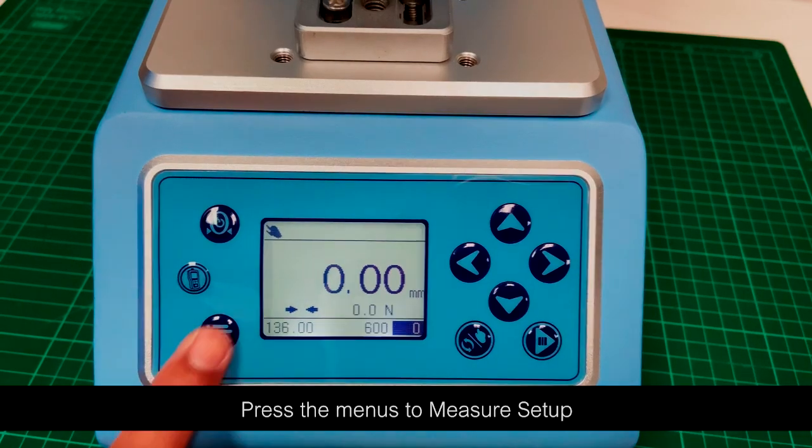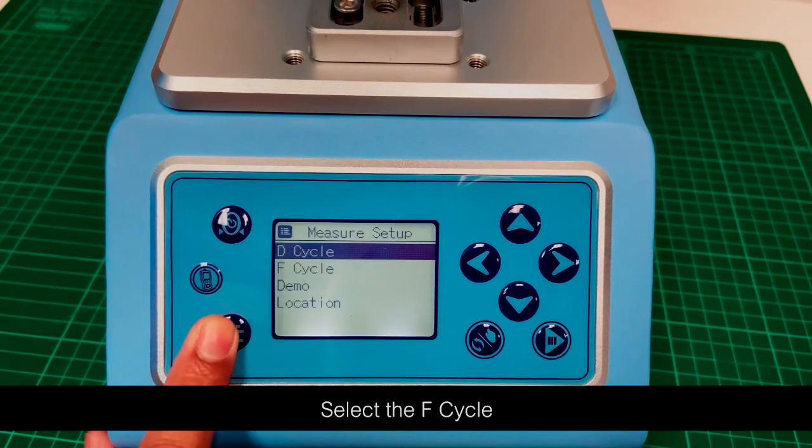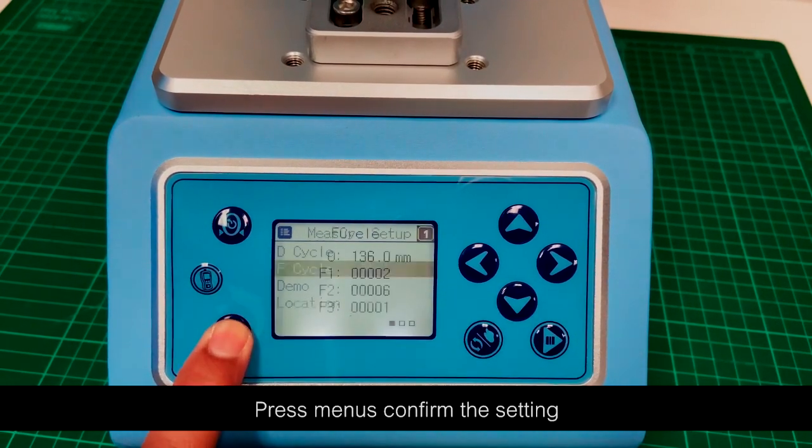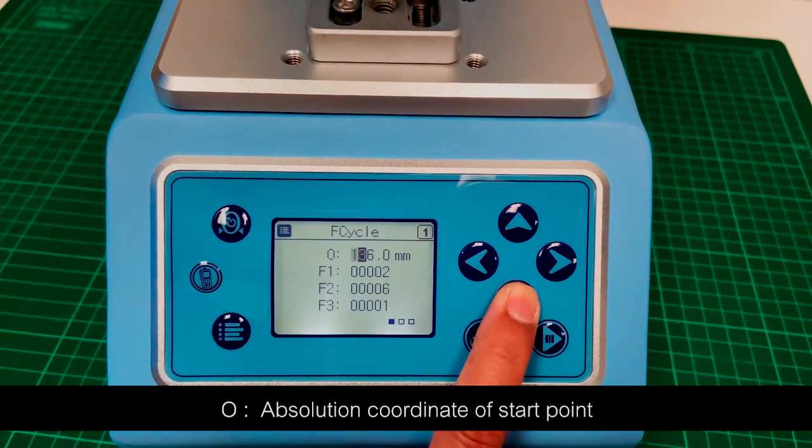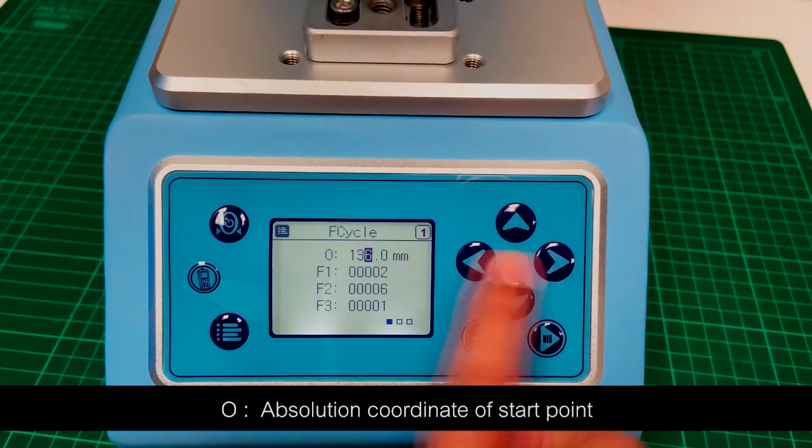Press the menus to measure setup. Select the F cycle. Press menus to confirm the setting. O: absolute coordinate of start point.